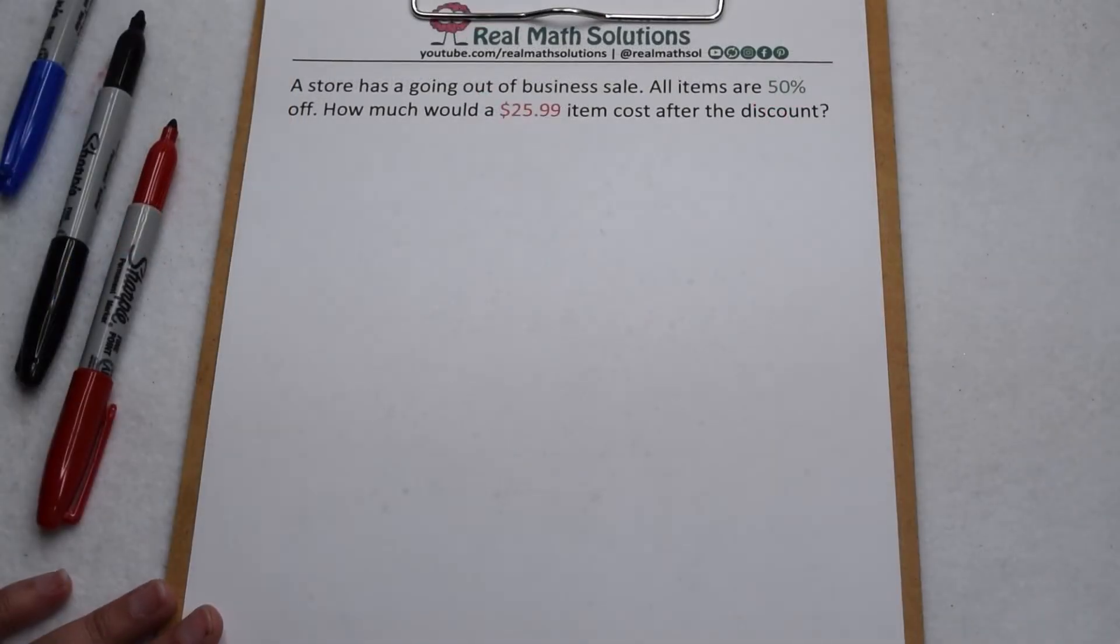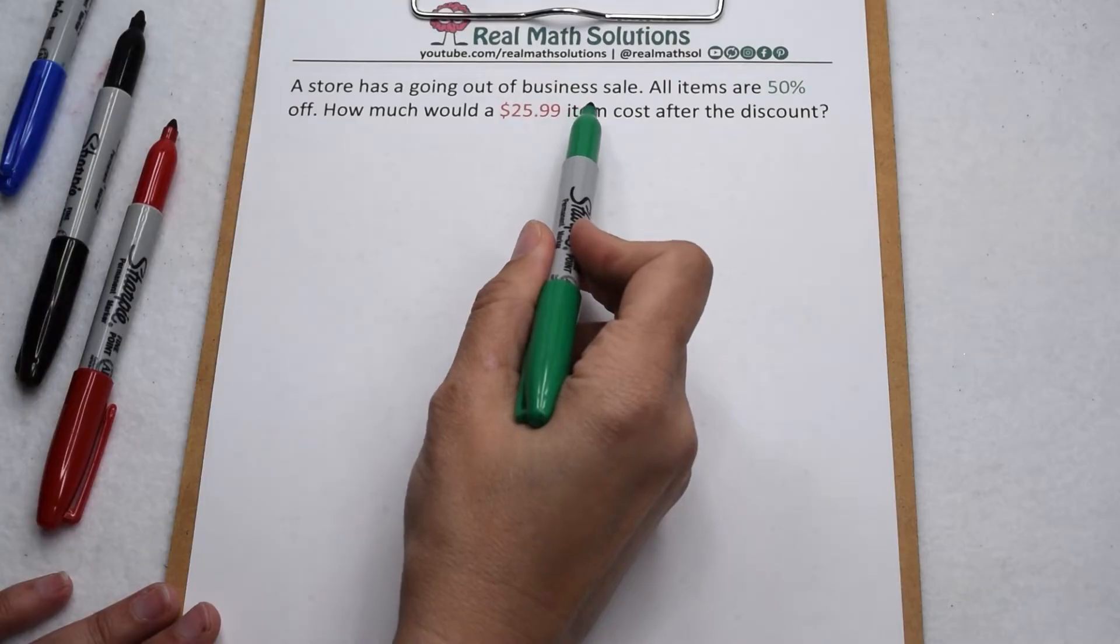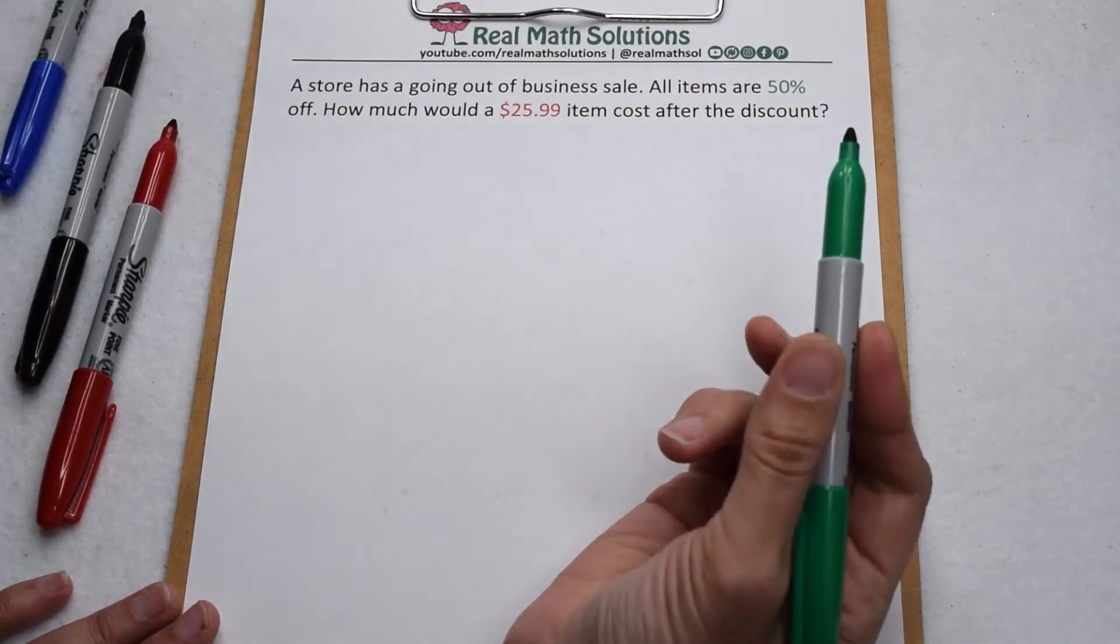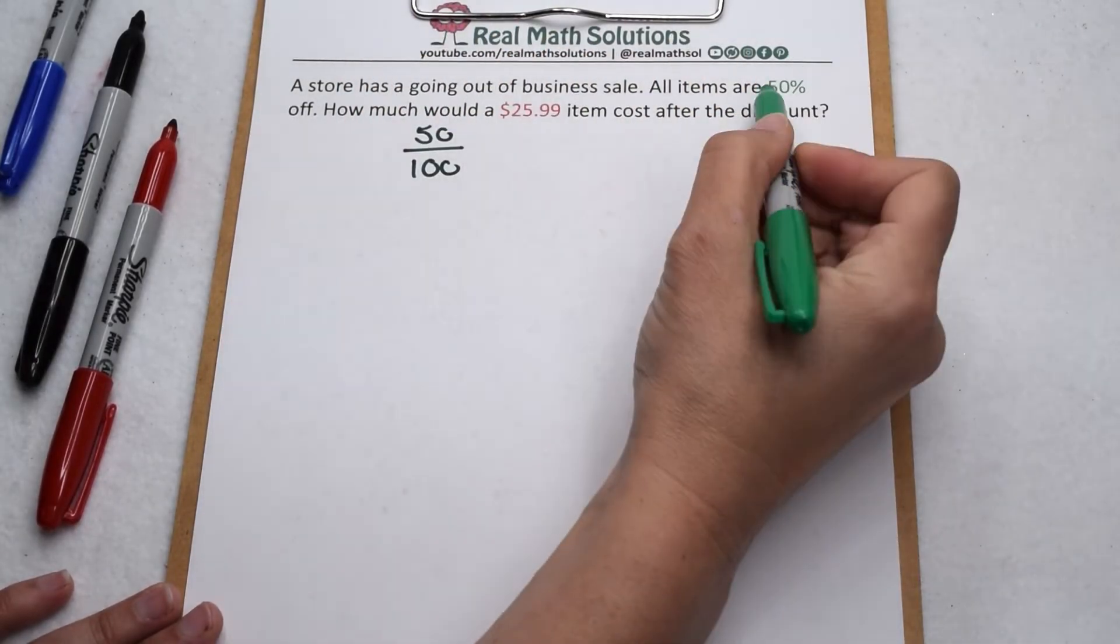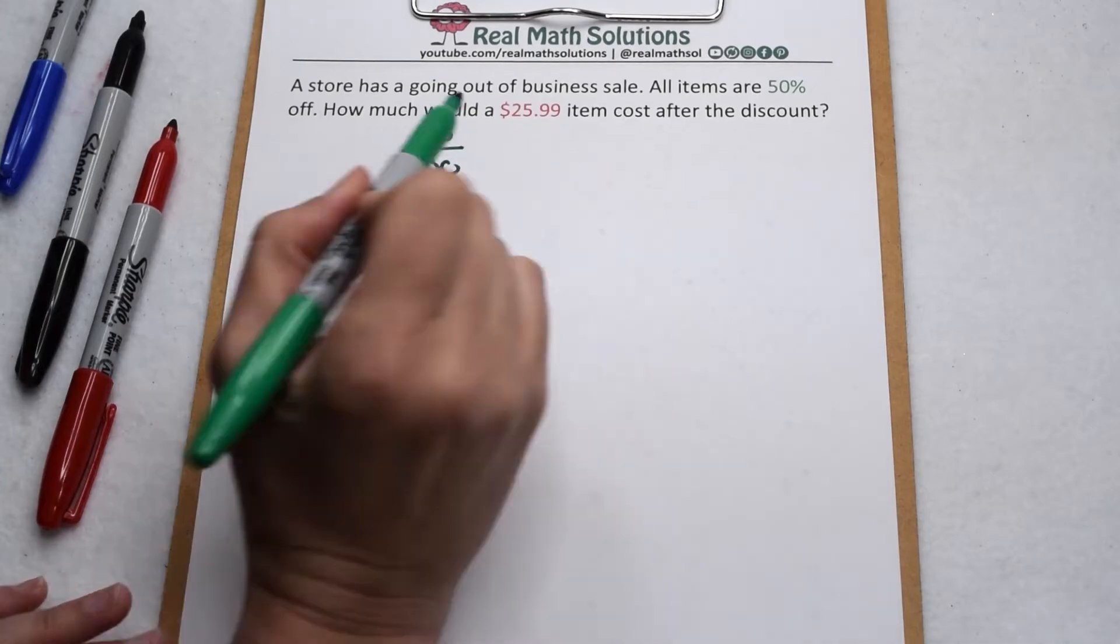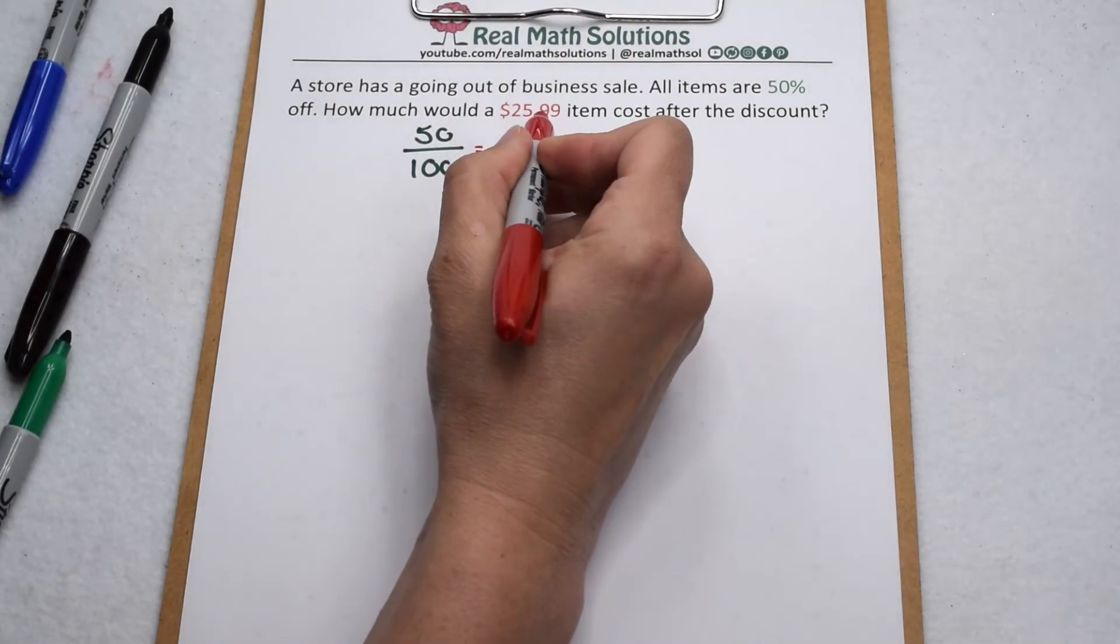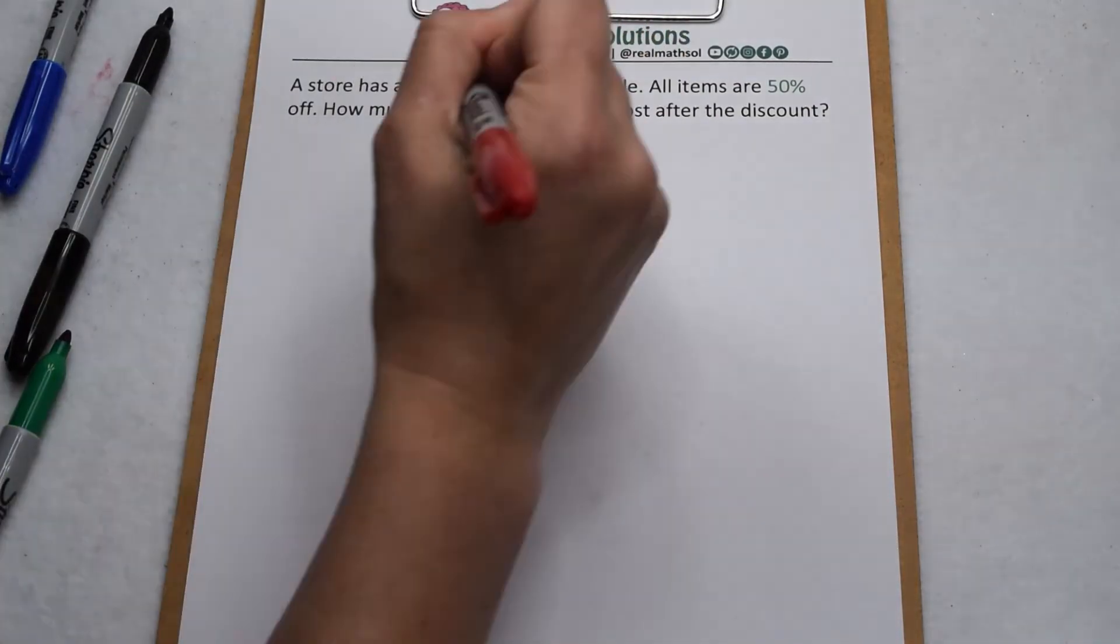Proportions can also be used to figure out how much an item is going to cost after a discount. So a store is having a going out of business sale. All items are 50% off. How much would a $25.99 item cost after the discount? Well, again, we're comparing part out of whole. So a 50% discount means it's 50 out of 100 for our part out of whole. So then for our item, $25.99 is going to be our whole because that's the entire cost of the item and we're looking for what part is going to be taken off.